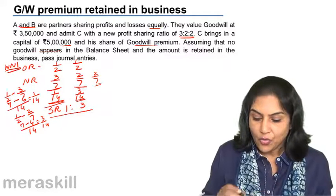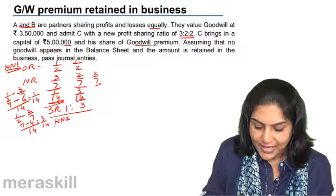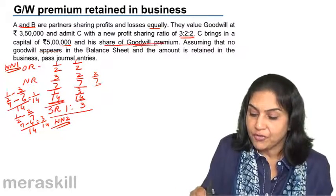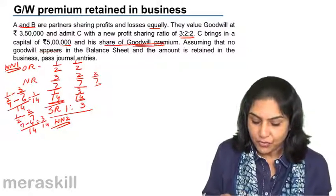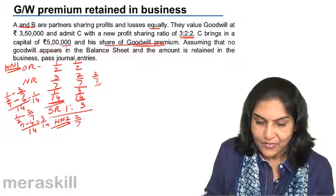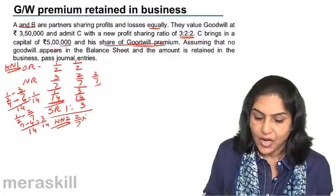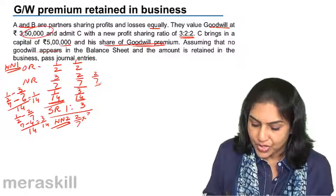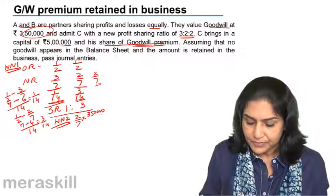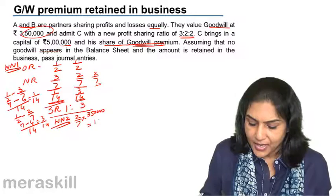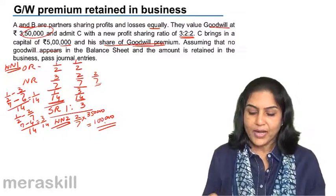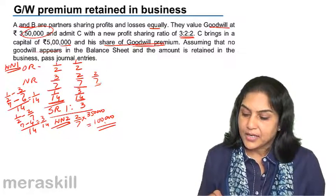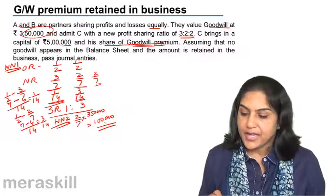Working note 2: C's share of goodwill premium. His share is 2/7, so we calculate 2/7 of 3,50,000, which gives us 1 lakh. So the goodwill premium to be brought in by C is 1 lakh.